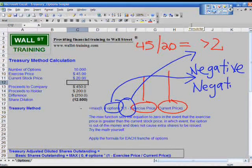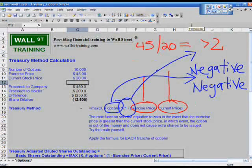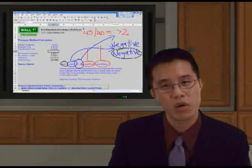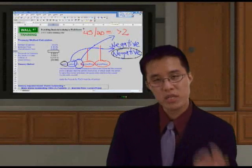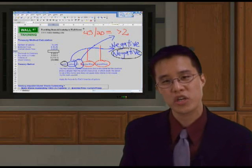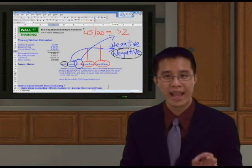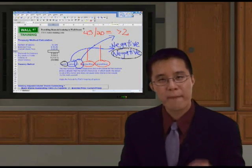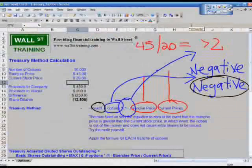Once you take this negative number, and you tell Excel, hey, listen, take the max of either 0 or this negative number. What do you think Excel's going to do? It's going to come back and tell you, let me take 0. So, if it says, take 0, that means what? There is no share dilution. There's no additional shares that would have been issued had the management team exercised these options. So, from that perspective, the share dilution is 0 here.